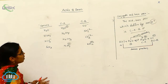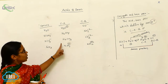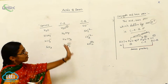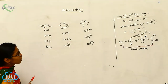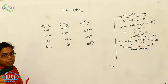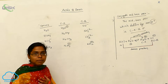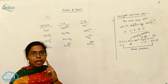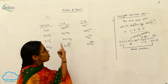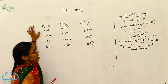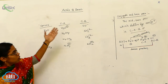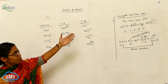These pairs differ by only one H plus ion, so these are called conjugate acid-base pairs. This is the second acid-base theory. The first one, Arrhenius acid-base theory, we have completed. The second one, Bronsted acid-base theory, always explains the conjugate acid-base pairs.